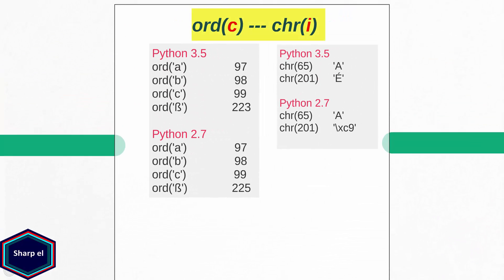Now let's move to the next two functions, ord and chr, which are very simple. In Python 3, the ord function takes a character as an argument and returns its unicode value, whereas in Python 2, the ord function returns the byte value. The chr function is the inverse of the ord function.